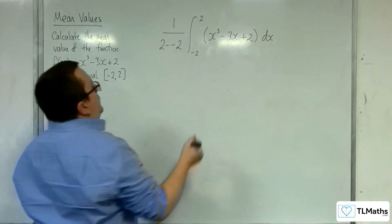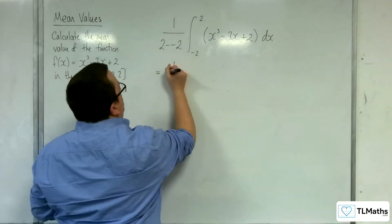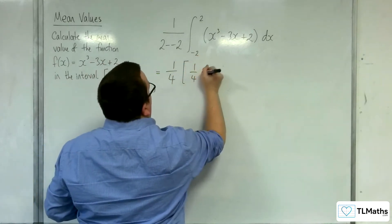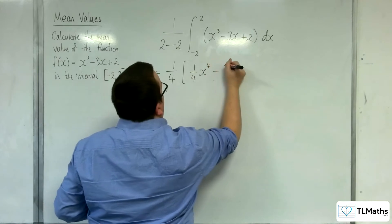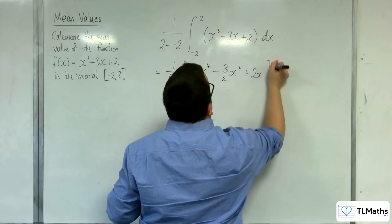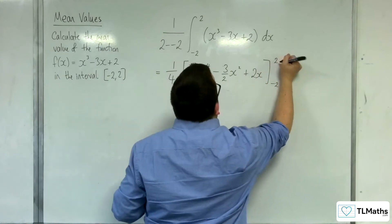OK, so we have this equal to 1 quarter times by 1 quarter x to the 4 take away 3 halves x squared plus 2x evaluated between -2 and 2.